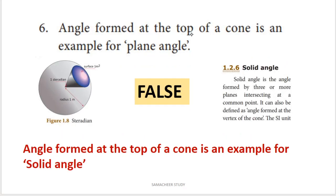Next statement: the angle formed at the top of a cone is an example of a plane angle. Plane angle and solid angle are two types of angles. According to the textbook, the angle formed at the vertex of a cone is a solid angle, not a plane angle. So this statement is false. The correction is: the angle formed at the top of a cone is an example of a solid angle.